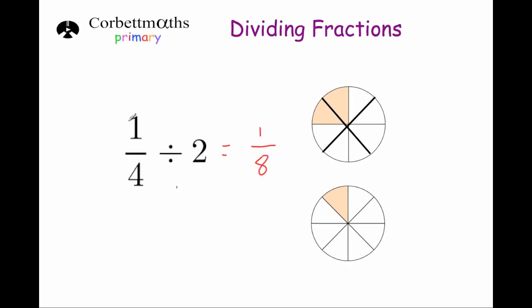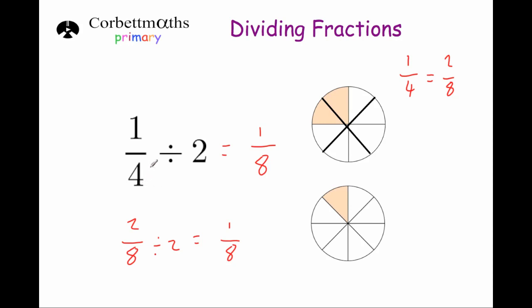Let's see why that worked. When we divided a quarter by 2 and got 1 eighth, the first thing we did was find an equivalent fraction. Because 1 is not divisible by 2, we get an equivalent fraction where the numerator is divisible by 2 — the easiest way is to multiply the top and bottom by 2. So 1 quarter becomes 2 eighths, which is the same value. Then 2 eighths divided by 2 gives 1 eighth. There's also a shortcut: if the numerator isn't divisible by the number you're dividing by, you can just multiply the denominator by that number. So dividing by 2 means doubling the denominator; dividing by 3 means trebling the denominator.